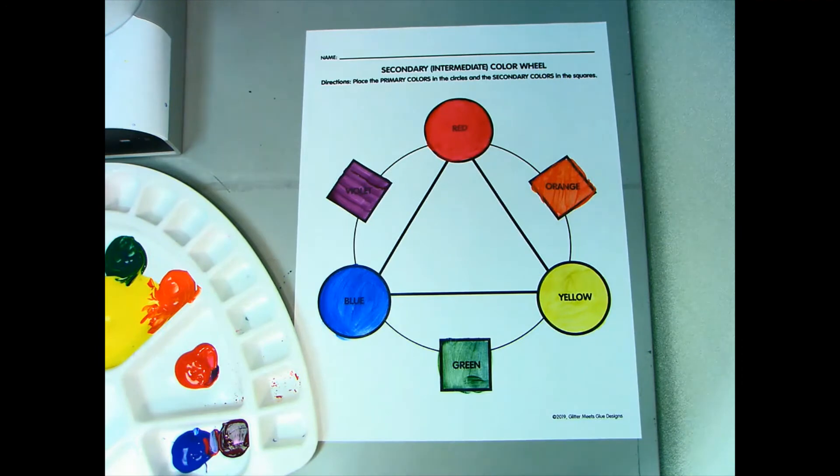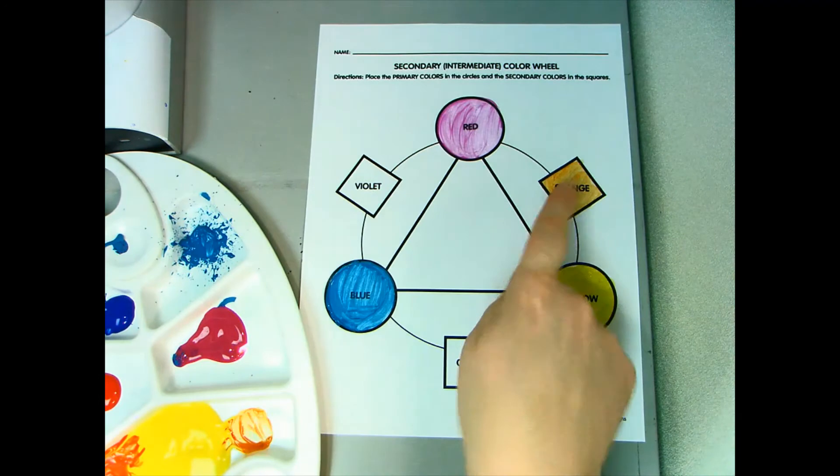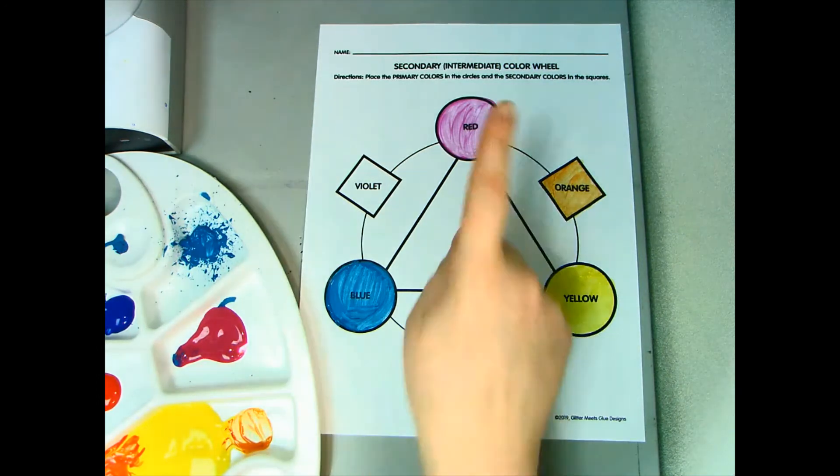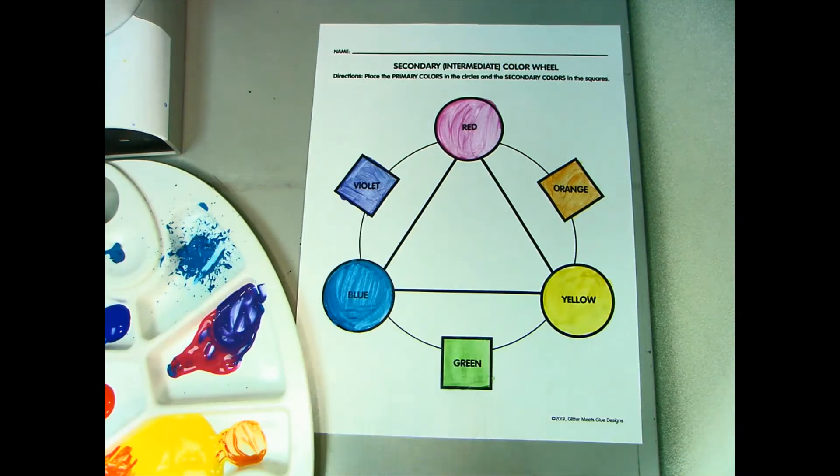Let's try this again with the colors magenta, cyan, and yellow. Magenta and yellow make orange. Magenta and cyan make violet. Cyan and yellow make green.